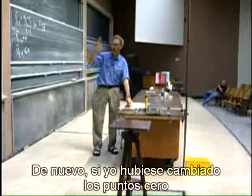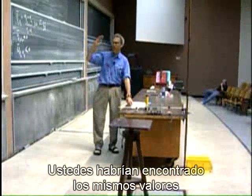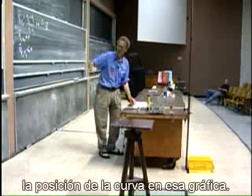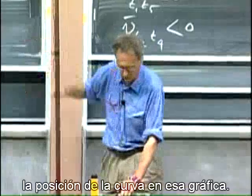Again, if I had changed the zero point, you would have found the same values for the average velocity. The only difference would have been the position of the curve in that plot.